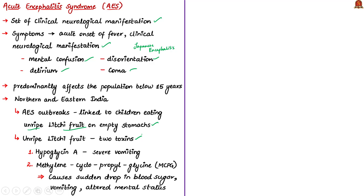These two toxins perform different roles in the body of children. Hypoglycine A is a naturally occurring amino acid found in unripe lychee that causes severe vomiting — also called Jamaican vomiting sickness. The toxin methylene cyclopropylglycine (MCPG) is a poisonous compound found in the seeds of lychee fruit that causes a sudden drop in blood sugar, vomiting, altered mental states leading to lethargy, unconsciousness, coma and even death. These toxins cause sudden high fever and seizures — also called fits — requiring hospitalization in young and severely malnourished children.